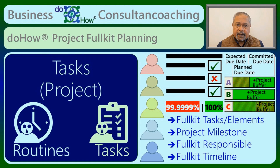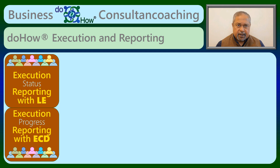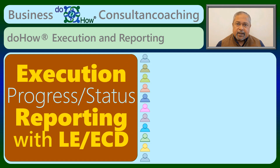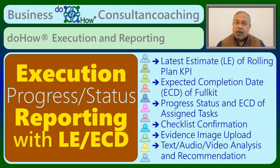The necessary routines and tasks for realizing the improvements are also identified. During and after execution, the progress status along with the latest estimate and the expected completion date is updated by everyone for the rolling plan and full kit respectively. The progress status and the expected completion date of the assigned tasks is also reported by everyone, with checklist confirmation, evidence image upload and an analysis of the current reality with recommendation. The reporting is mainly for the benefit of the others in the team.